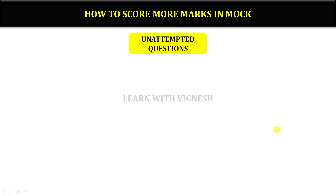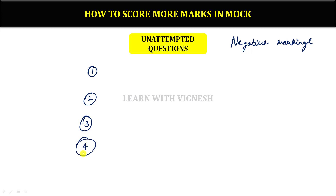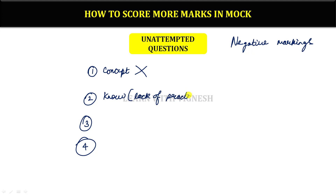Third point: unattempted questions. In this case, questions that you attempt may carry negative marking in RRB. For SSL, negative marking applies. Attempt questions where you know the concept, and consider the question type and possibility before attempting unknown concepts. Lack of practice leads to missed attempts.